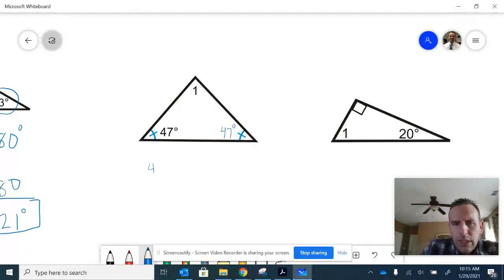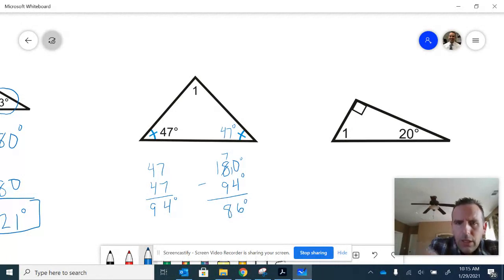So 47 and 47 add up to 94 degrees. If we take 180 degrees, the total angle sum, and subtract 94 degrees, let's see what we have here, 17 subtract 9, 86 degrees. So the answer to our missing angle, the measure of angle 1, is 86 degrees.